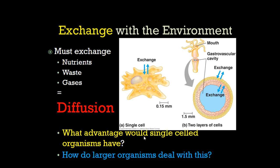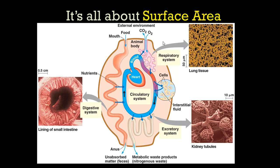If I go from being a single cell to a multicellular creature, I have a problem — not all my cells are in contact with the environment. So how does a larger creature exchange nutrients when parts of the body aren't touching the environment? The secret to exchange and increasing the rate of diffusion is surface area. In our digestive tract, we have villi and microvilli that increase surface area so we can let nutrients in. In our lungs, we have alveoli to increase surface area so oxygen gets in and CO2 gets out. In our kidneys, we have the glomerulus to increase surface area and get rid of urea so we don't toxify ourselves.